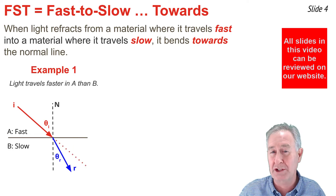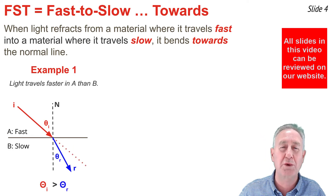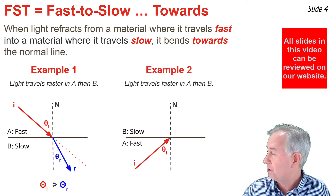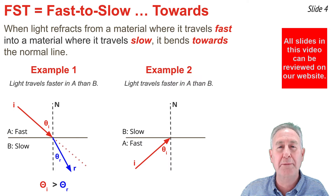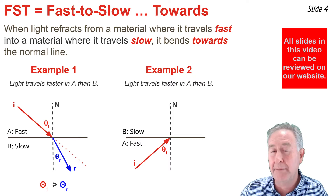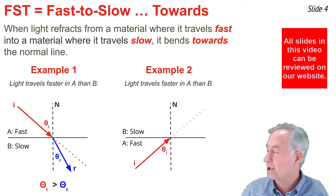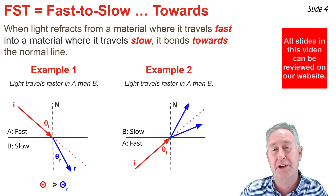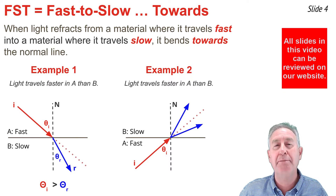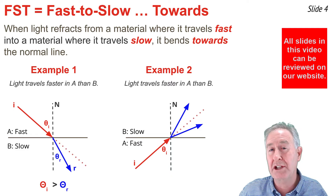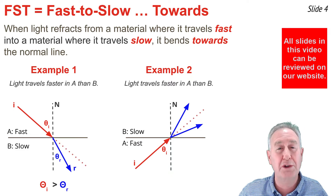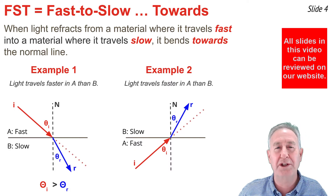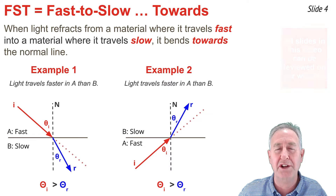In a situation such as this, the angle of incidence is greater than the angle of refraction. In example two, the incident ray is in the faster material A approaching the boundary with material B, but this time from underneath the boundary. Instead of traveling along the straight line path, because it's fast to slow, it bends towards the normal line, placing the blue refracted ray closer to the normal line than the red incident ray is. Once more, the angle of incidence is greater than the angle of refraction.